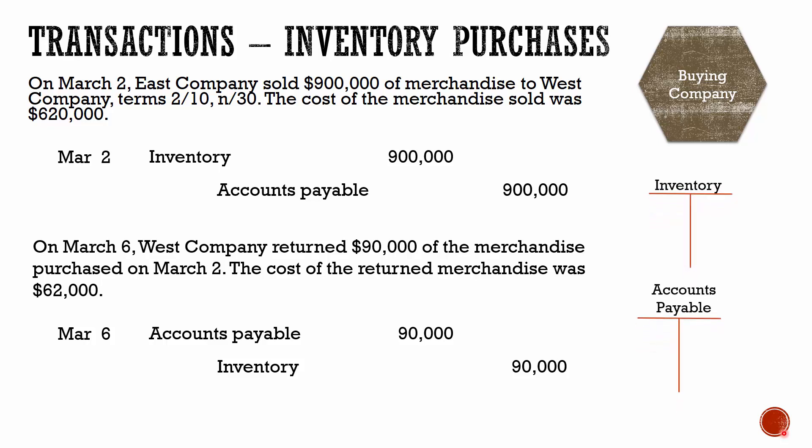If we look at our accounts, we originally purchased $900,000 worth of inventory and owed $900,000, and now it's been reduced by the $90,000 return. So our inventory balance is currently $810,000, and the amount we owe in accounts payable is also $810,000.